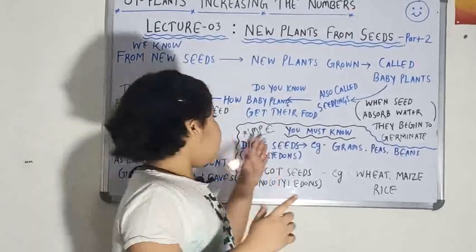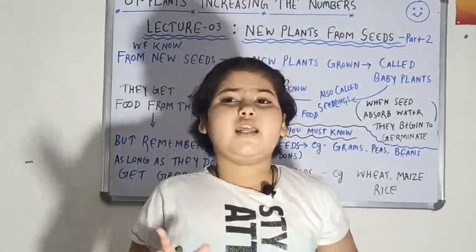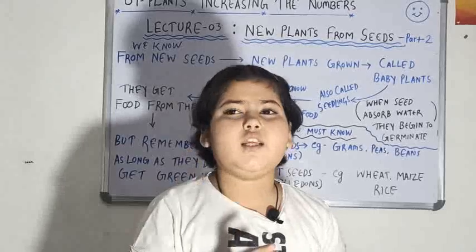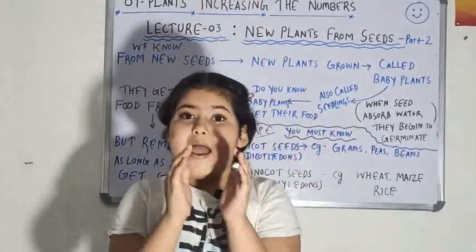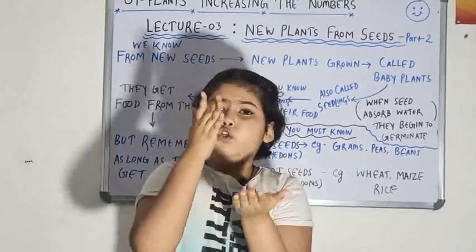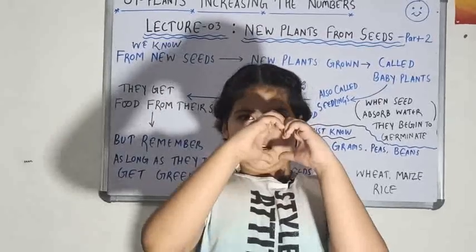So see what is dicotyledons. So basically when a seed is just a gram. Yeah gram. See when a seed is having two seed leaves. Just like see this is a gram. See this is like a gram.